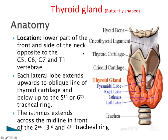First, the anatomy. Here you can see the location of thyroid gland, which is situated in our neck. Its position is between C5 to C7 vertebrae — it is just opposite to the C5 to C7 vertebrae. The various lobes of the thyroid gland extend from just below the thyroid cartilage to the trachea.